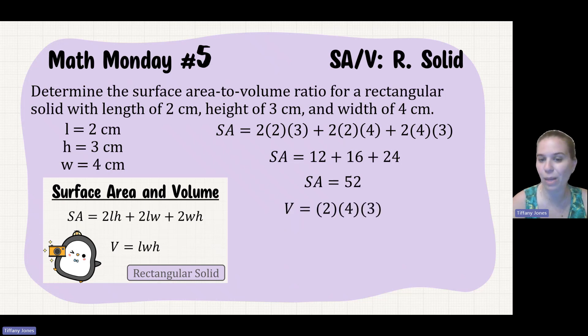Our volume is just length times width times height. So 2 times 4 times 3, which is 24. So my surface area to volume ratio is 52 over 24, which is 2.17.